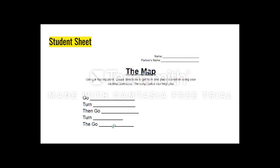Here's the sheet I had students use. You can scaffold this — if students can work on their own without the sheet, great, but for students who need more guidance, I created this for them. The lines are where they would write their cardinal directions: go north, turn south, go west, turn north again, then go east. You can scaffold this for the needs of your group of kids.